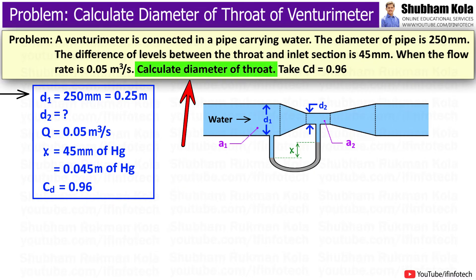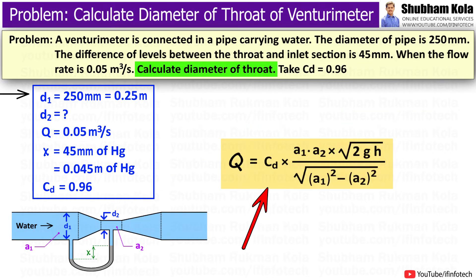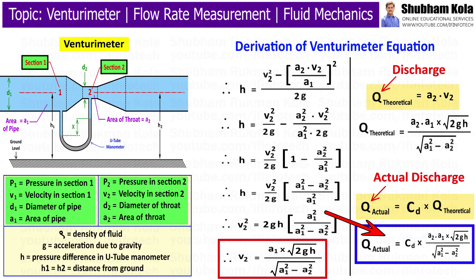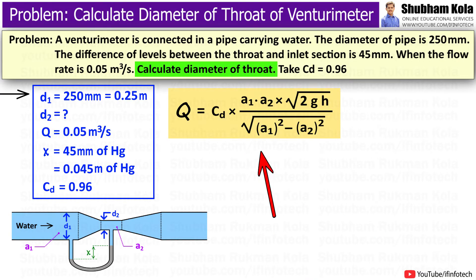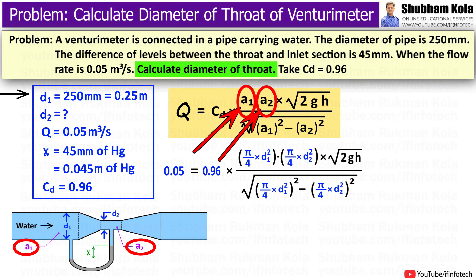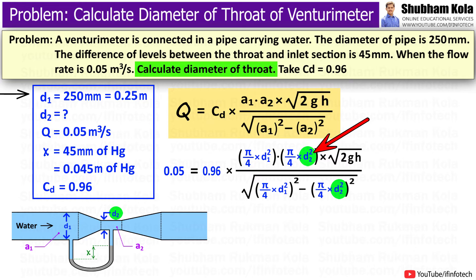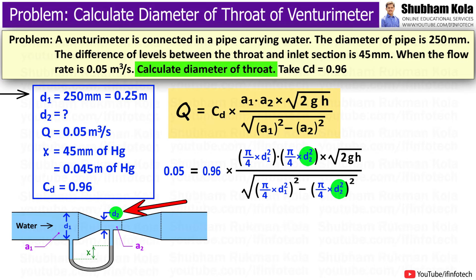In this problem, we want to calculate the diameter of the throat of a horizontal Venturimeter. This can be calculated using the discharge formula derived previously, where A1 and A2 are the areas of the inlet and throat sections respectively. We know that area equals (π/4) × diameter², where d2 is the throat diameter to be calculated. Using this formula, we will calculate the throat diameter.